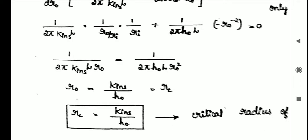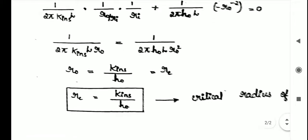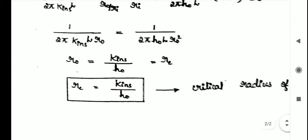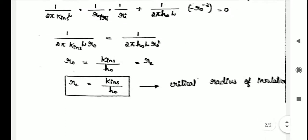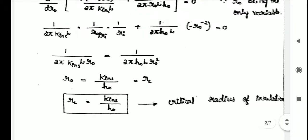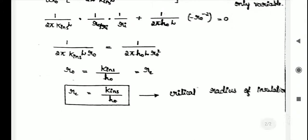R0 you will get K insulated divided by H0. That is Rc, critical radius. So Rc for a cylinder is given by K insulated divided by H0. This is critical thickness insulation for a cylinder. In the next video we will derive critical thickness of insulation for a sphere.